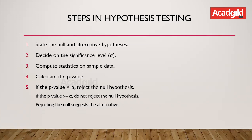A hypothesis test evaluates two mutually exclusive statements about a population to determine which one is best supported by data drawn from a sample. The steps in hypothesis testing are: state the null and alternative hypothesis, decide on the significance level, compute statistics on sample data, calculate the p-value, and if the p-value is less than alpha, reject the null hypothesis; if the p-value is greater than or equal to alpha, do not reject the null hypothesis.